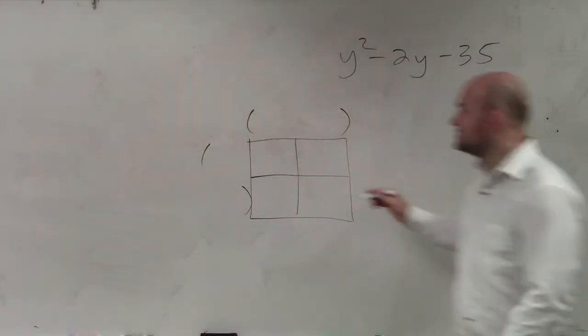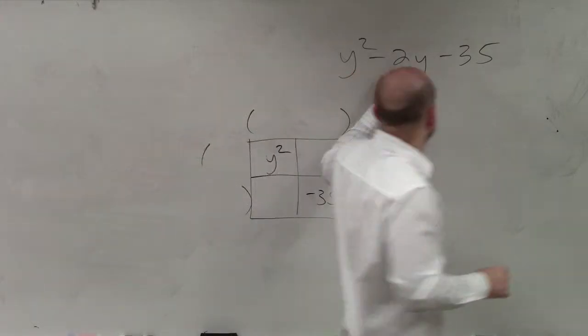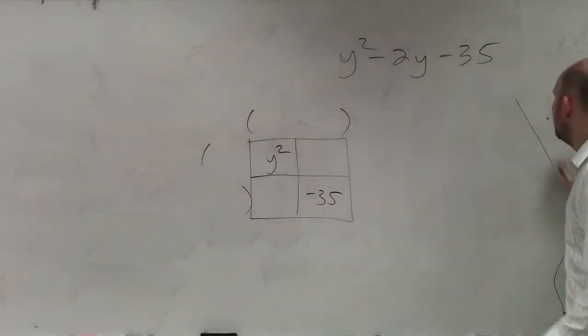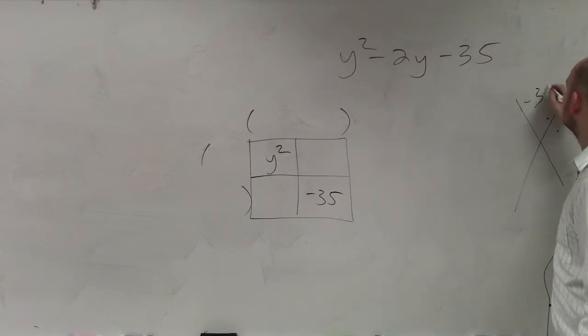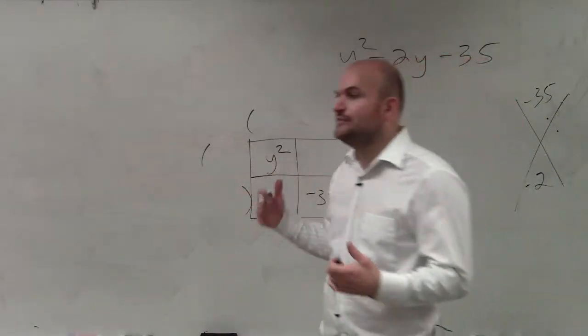So our area right now is we have y squared and we have negative 35. And our two other boxes need to add up to negative 2. So we need to figure out what two numbers multiply to give you negative 35, and then add to give you negative 2. So you look at your factors that give you negative 35.